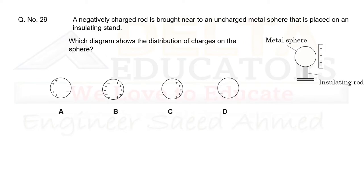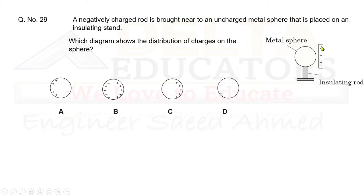Question 29: A negatively charged rod is brought near an uncharged metal sphere on an insulating stand. The negatively charged rod repels free electrons in the metal sphere, pushing them to the far side. This leaves a positive charge on the side near the rod and negative charge on the opposite side, as shown in option B. Correct option is B.